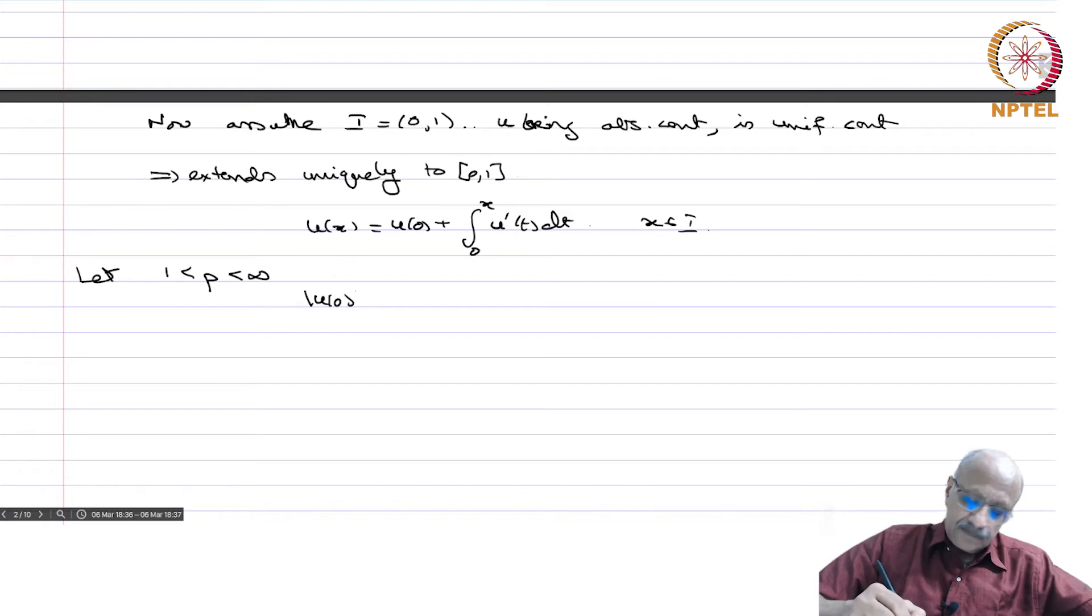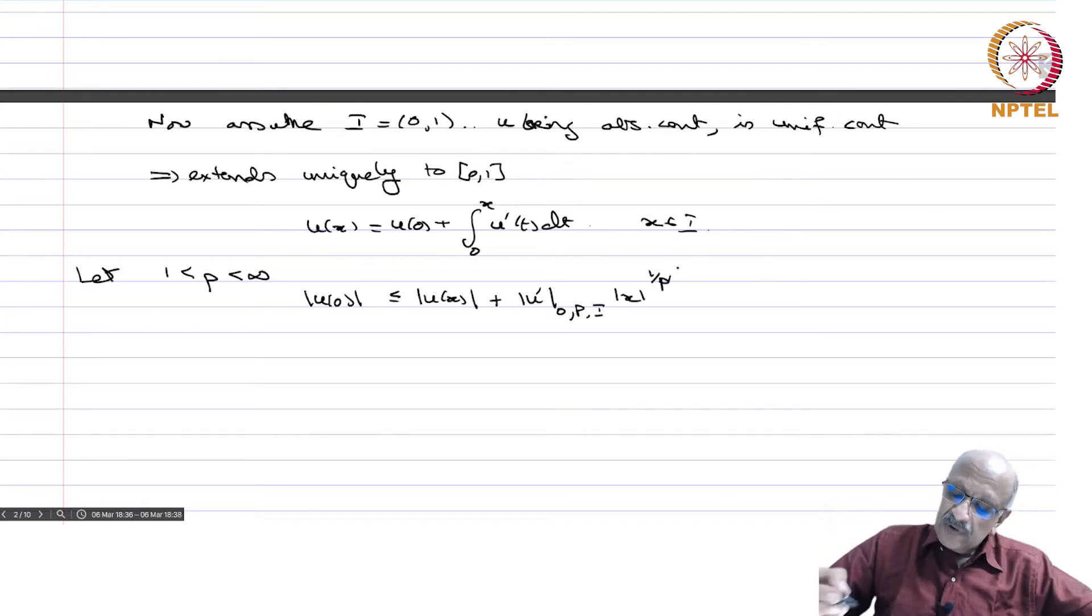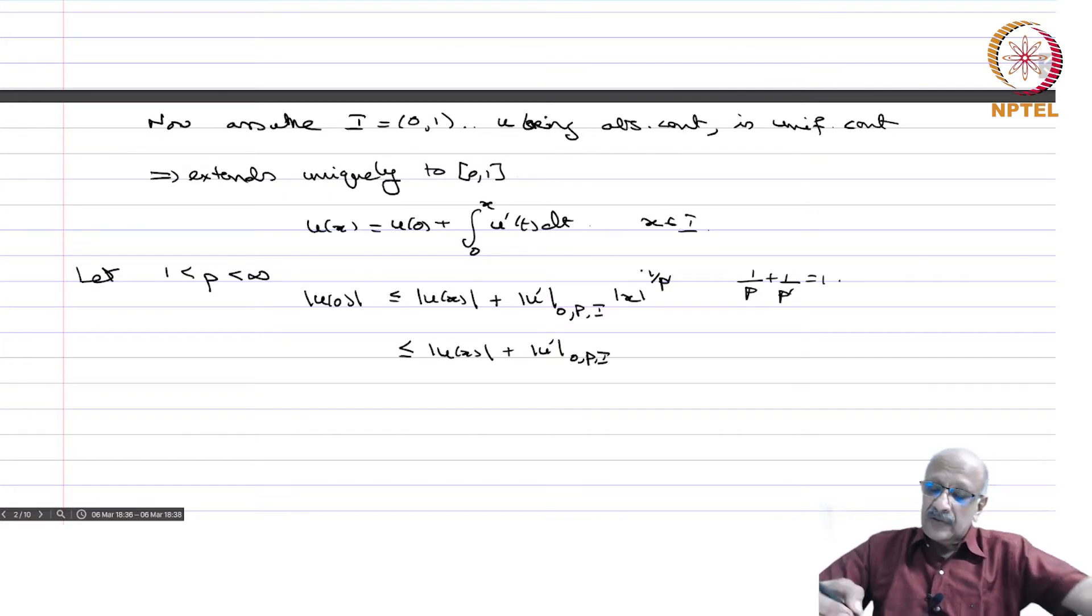You can write u(x) equals u(0) plus integral 0 to x of u'(t) dt for all x in it. Let us assume that 1 less than p less than infinity. So |u(0)| is less than or equal to |u(x)| plus, and I want to estimate this integral using Holder's inequality. So plus |u'|_{L^p(0,I)} times |x|^{1/p'}, where 1/p plus 1/p' equals 1.